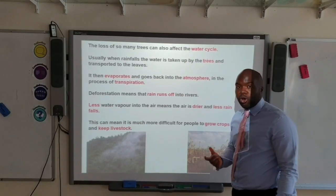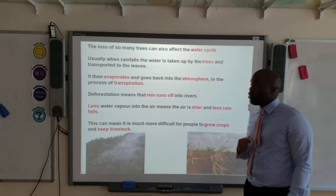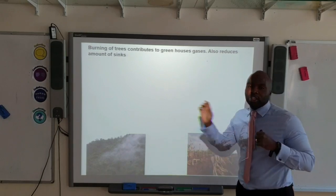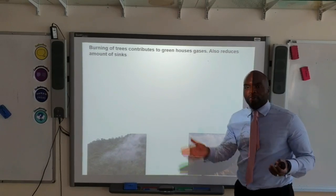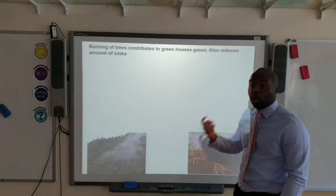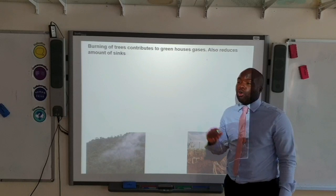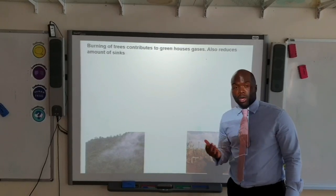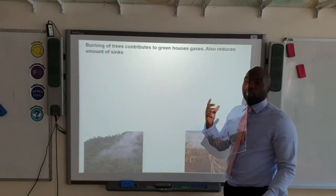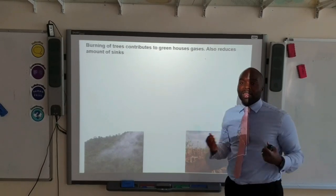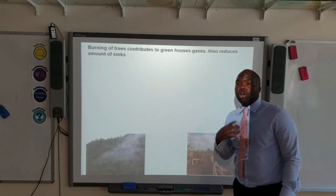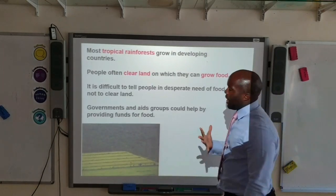Deforestation can also affect livestock because it disrupts the water cycle. Often when trees are cleared as part of deforestation, they are simply burnt, which contributes a lot of greenhouse gases to the atmosphere. The burning of these trees also means there are fewer carbon sinks — less storage for carbon — and this contributes to global warming.